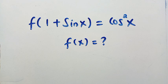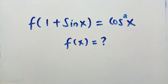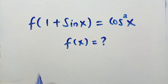Good day viewers, you are welcome. How to solve these nice functional equations: we have an inserted domain in the functions which is one plus sine x, and the right hand side is cos squared x. This involves trigonometry functions. I want to find f of x and I will solve this in two different ways.